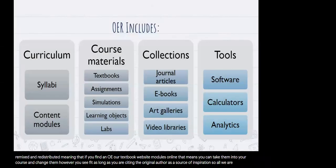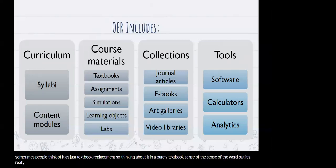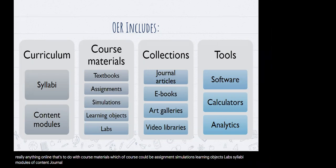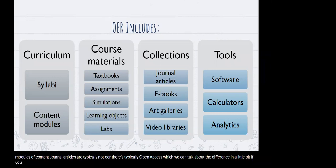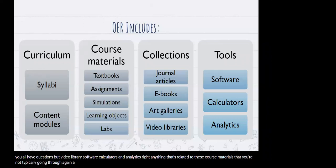OER is sometimes thought of as just textbook replacement, but it's really anything online related to course materials — which could include assignments, simulations, learning objects, labs, syllabi, modules of content, video libraries, software, calculators, and analytics. Journal articles are typically not OER; they're typically open access, which is a different distinction. Anything related to course materials that you're not typically getting through a publisher is what we'd consider OER.